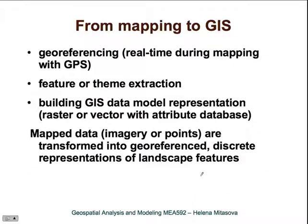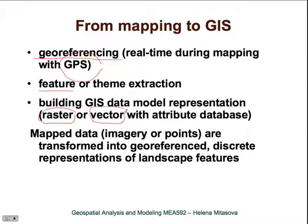So now we get either imagery or a set of points, and to get them into GIS we need to go through several steps. The first and very important one is georeferencing. Fortunately, georeferencing is now usually done in real time during mapping using GPS technology. Another, often more time-consuming part of the work is feature extraction — you get the image or the points, but to actually use it you need to extract features such as roads, buildings, and vegetation. Then you need to build the GIS data model to represent these features, which can be represented as either raster data or vector data, and we will explain the difference and show some examples.